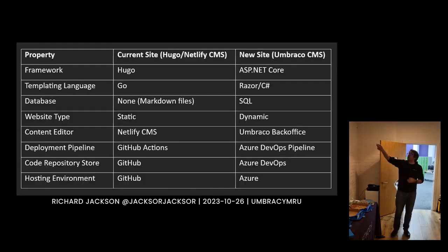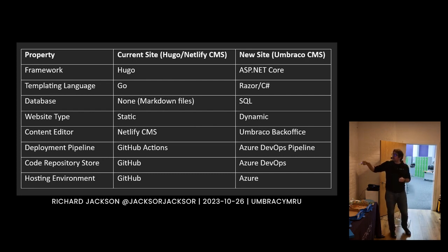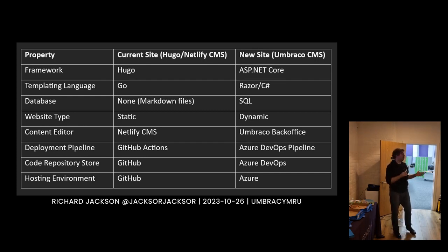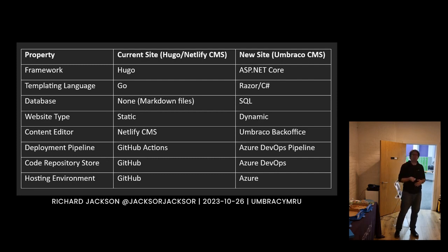Here's a like-for-like of what the current versus the new was: moving from Hugo to ASP.NET, Go to Razor, nothing to SQL, static to dynamic, et cetera. The last few might draw some questions — at Nightingale HQ we actually tend to prefer Azure DevOps over GitHub, so we typically just use that more. It's just a decision within the company.